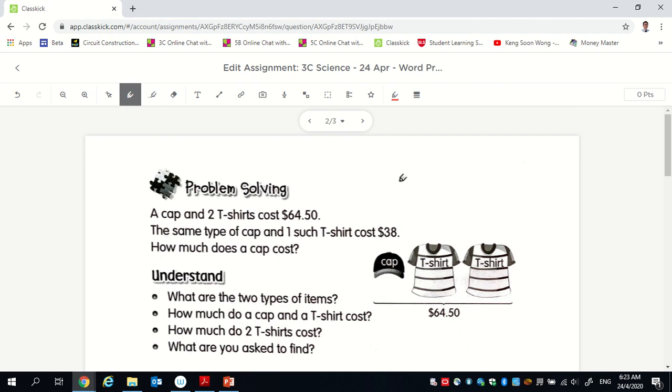So over here, you realize that it says a cap and two t-shirts cost $64.50. So one cap plus two t-shirts, which is here, you realize, let's highlight over here, cost this. So one cap, two t-shirts, $64.50. The same type of cap means same type of cap and one t-shirt cost $38.